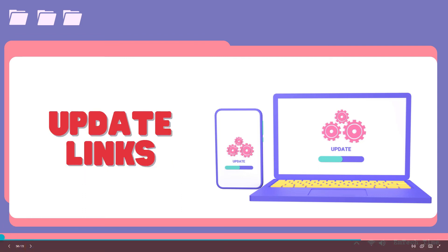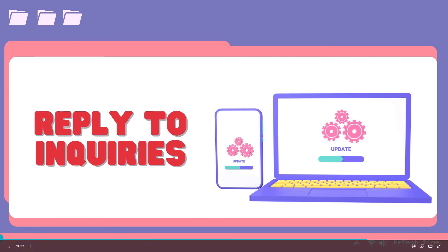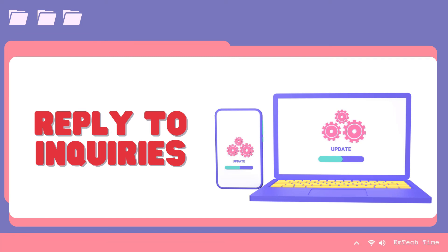Next, update links — regularly check links to other sites to make sure they are current, and add new links when available. You can also utilize an RSS feed that will update subscribers each time you publish fresh content. Third, reply to inquiries — be active and reply to visitors on any questions or comments they may have, as this will increase traffic and visitor engagement.